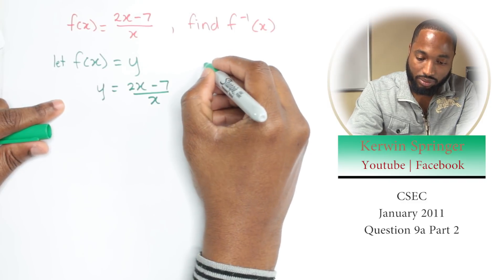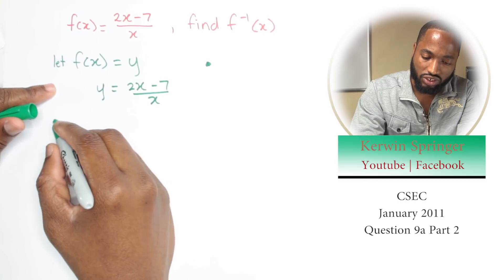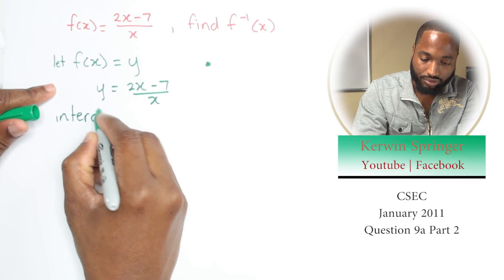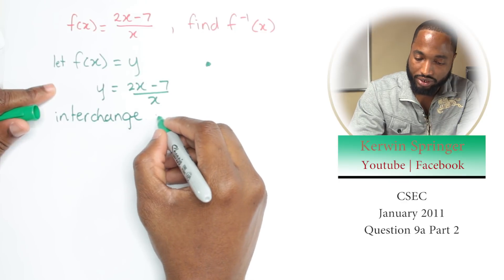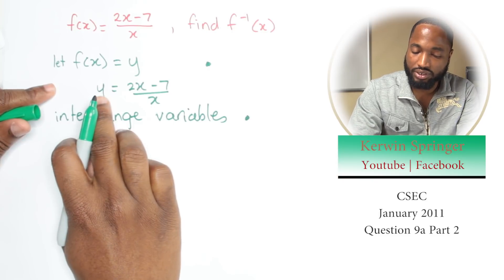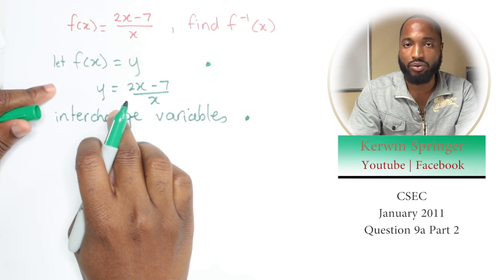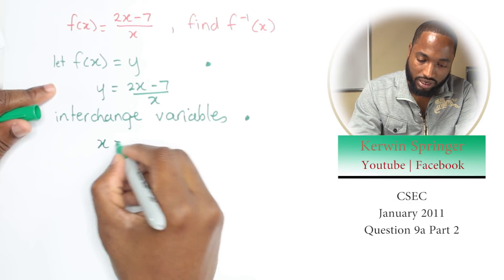Second step is interchange variables. The variables are x and y. So if I interchange variables, x is gonna go anywhere y is and y is gonna go anywhere x is. So I'll have something like this.